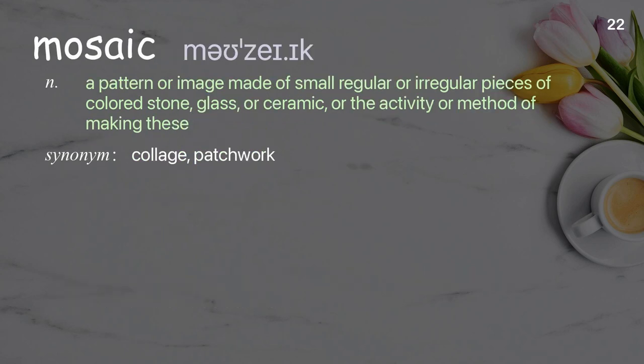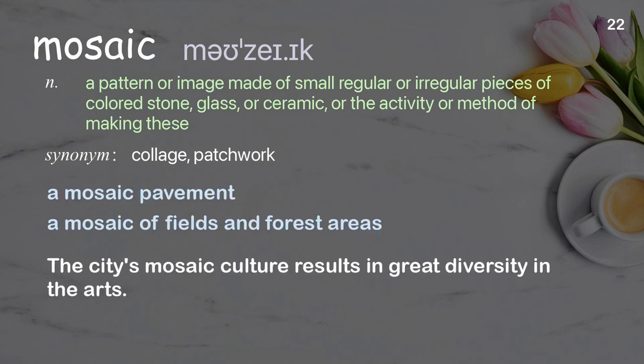Mosaic: a pattern or image made of small regular or irregular pieces of colored stone, glass, or ceramic, or the activity or method of making these. Examples: a mosaic pavement, a mosaic of fields and forest areas. The city's mosaic culture results in great diversity in the arts.